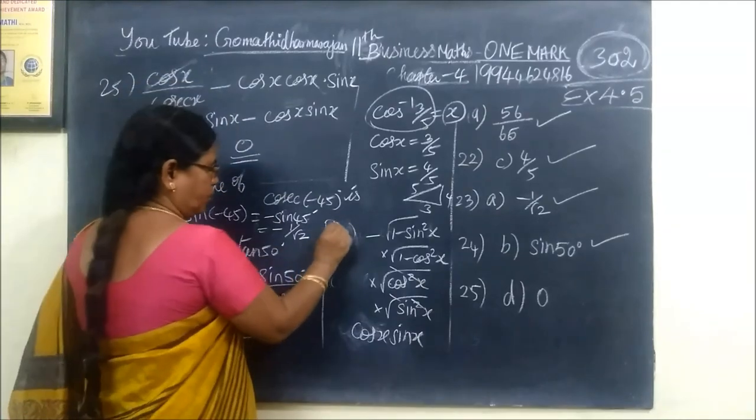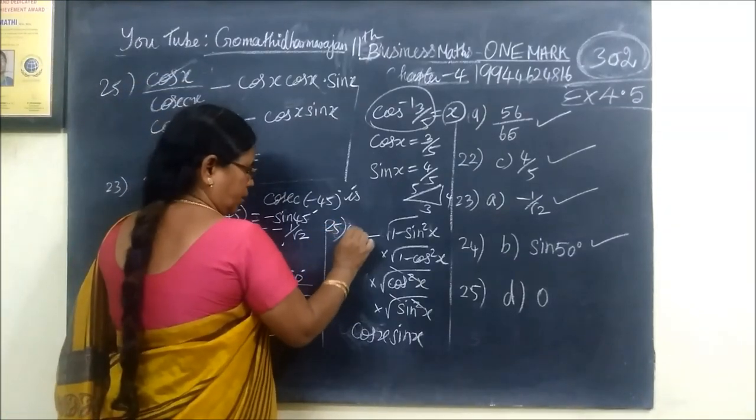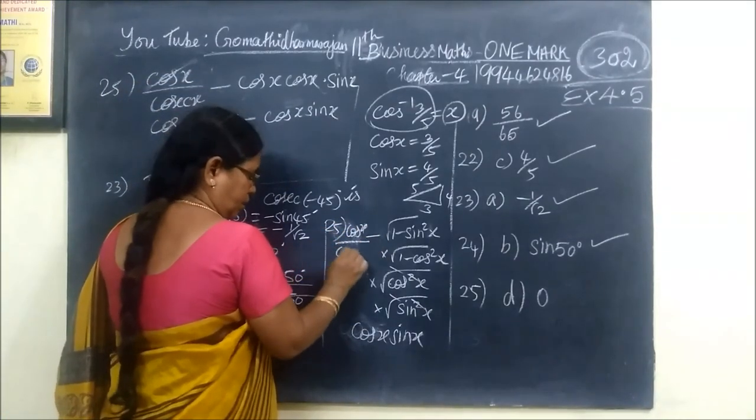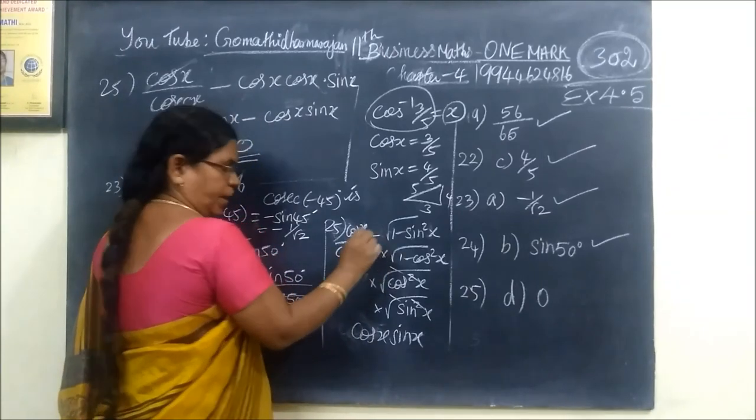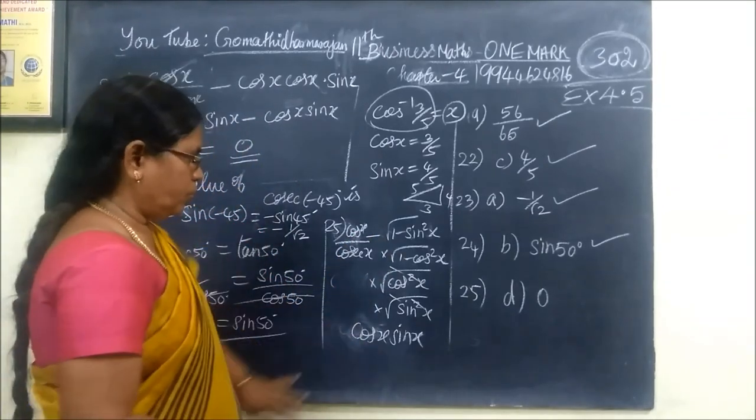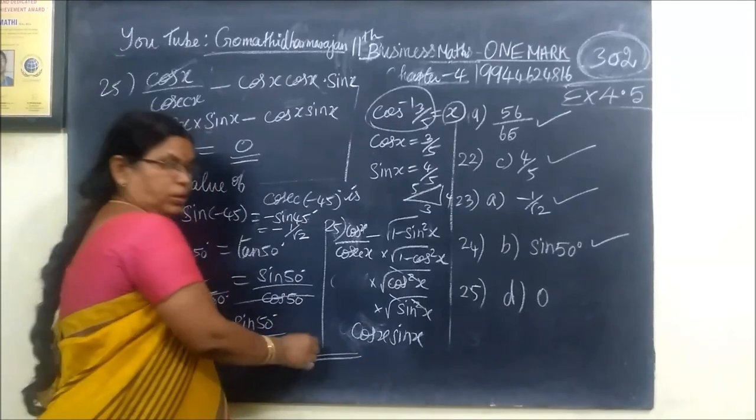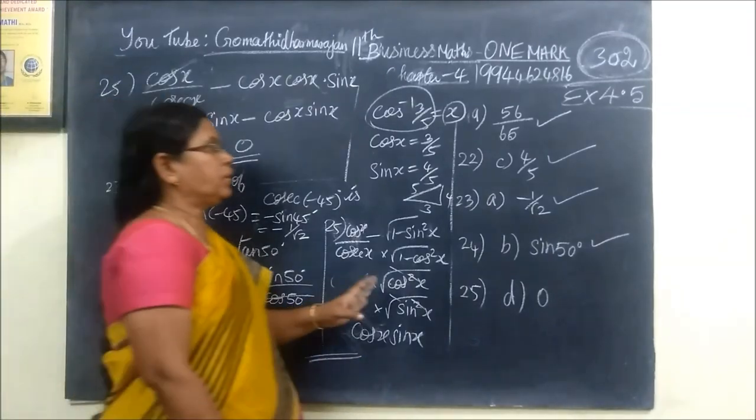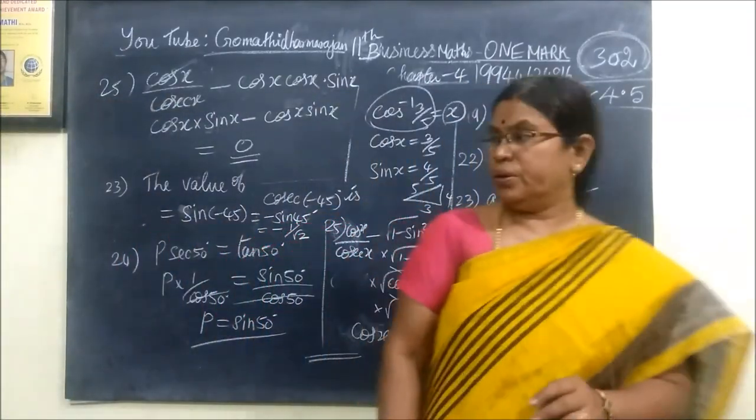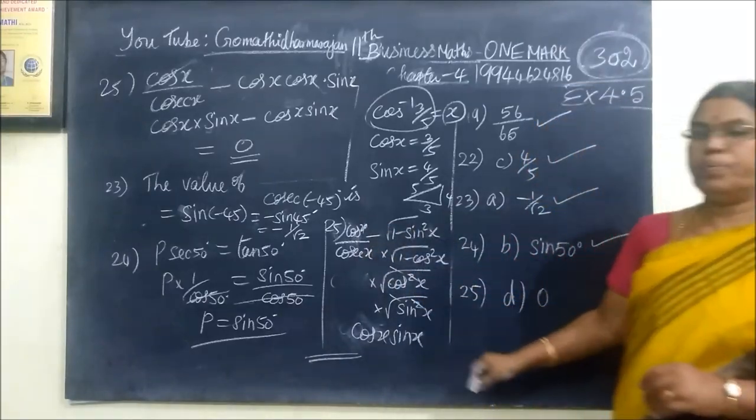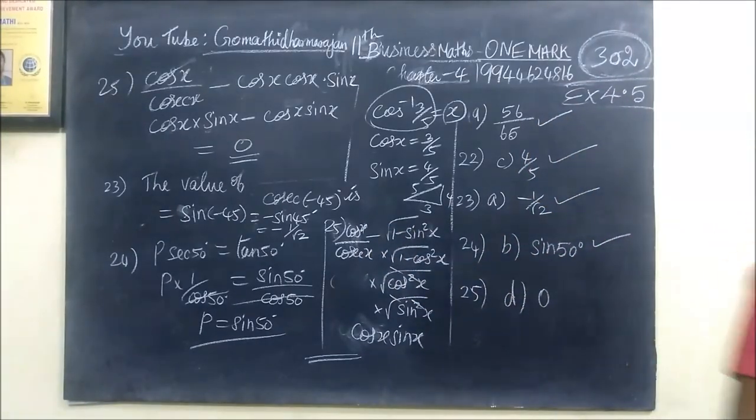This is question number 25, the cost of x y. This is the actual problem. In this video, the one mark is over. This is the exercise of 4.5 over.